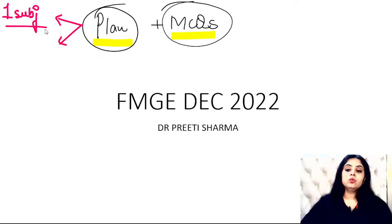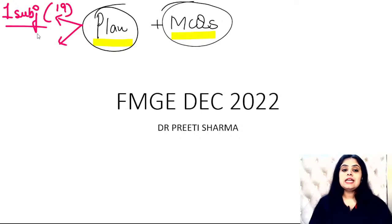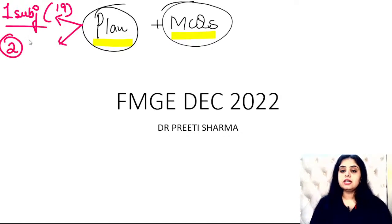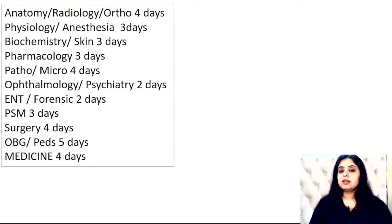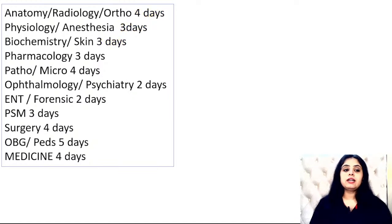Anatomy in two days, physiology in three days — one subject at a time to finish all 19 subjects. The other way is to do two subjects every day: half-day anatomy, half-day radiology. I've got both sets of timetables. This first timetable gives you a certain number of days with a combination of two or three subjects. I'm giving you a total of 30 days.